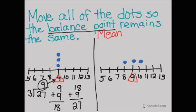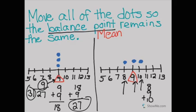So if I want my mean to still be nine with my balance point, I need to think of essentially three numbers that when added up and divided by three will give me a balance point of nine. So when I move my dots, now I have eight plus nine plus ten. Well, I know eight plus nine is seventeen. Seventeen plus ten is twenty-seven.